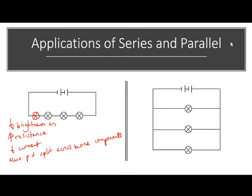In a parallel circuit, if I add another lamp in a new branch, the potential difference is the same across all lamps — there's no change. Therefore the lamps remain the same brightness.